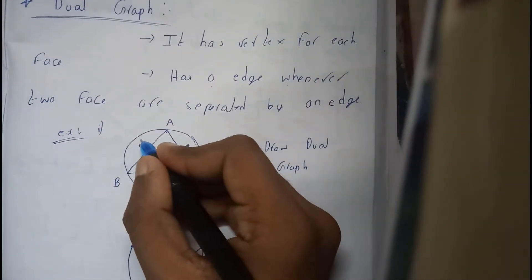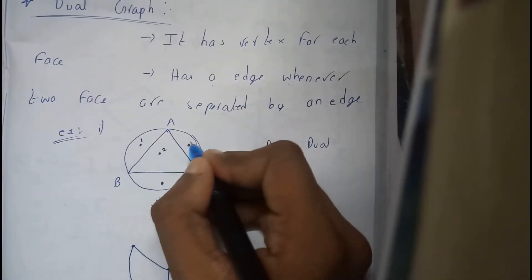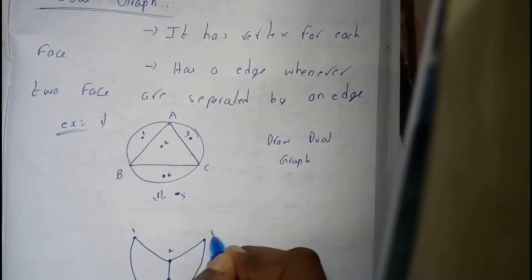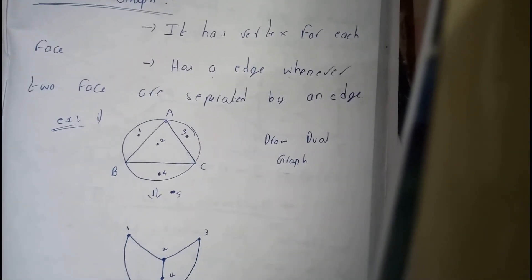To be much more clear let us assume this points one, two, three, four and five. One, two, three, four and five.